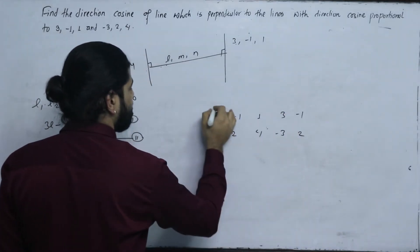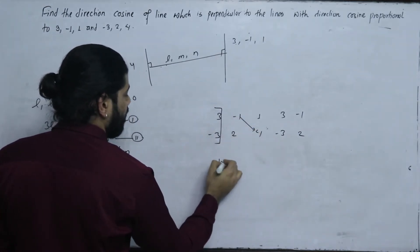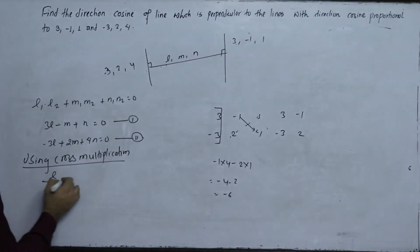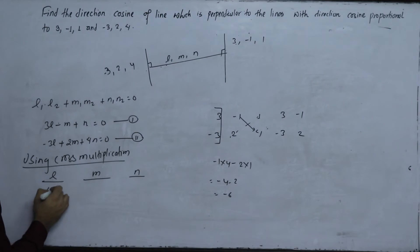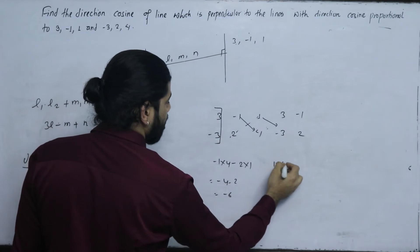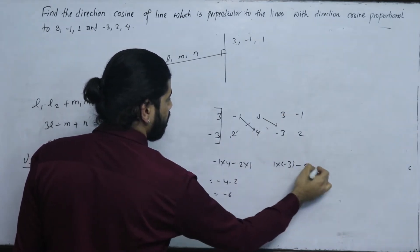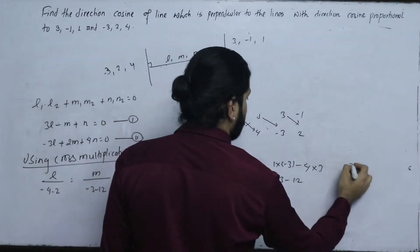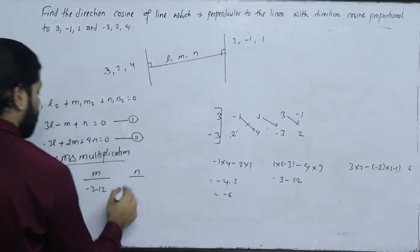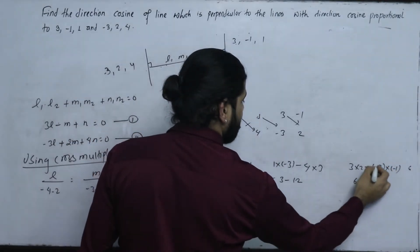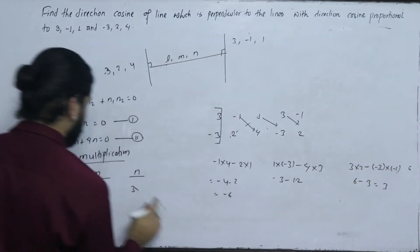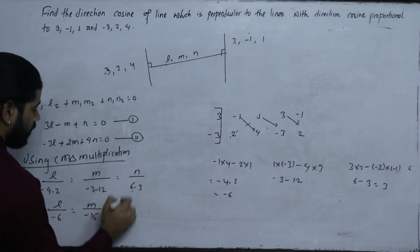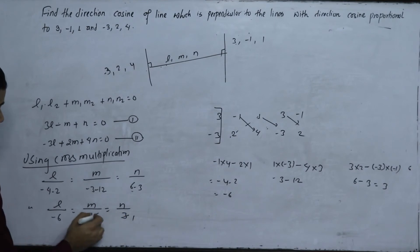Computing the cross product: L by minus 1 times 4 minus 1 times 2, M by 1 times minus 3 minus 3 times 4, and N by 3 times 2 minus minus 3 times minus 1. This gives L by minus 6 equals M by minus 15 equals N by 3. Dividing through by 3 gives L by minus 2 equals M by minus 5 equals N by 1.